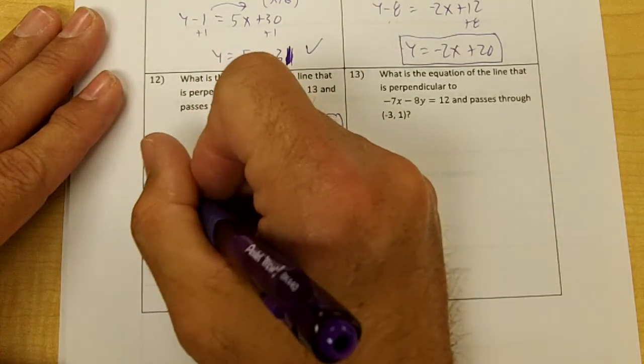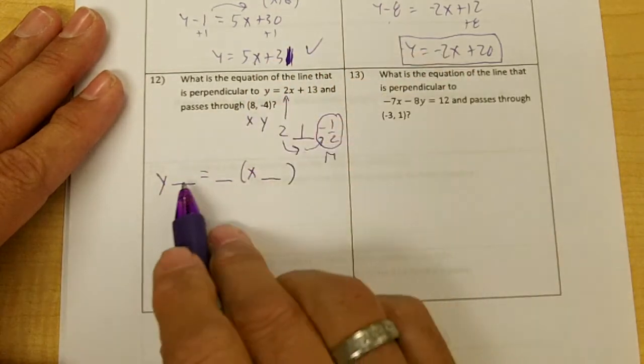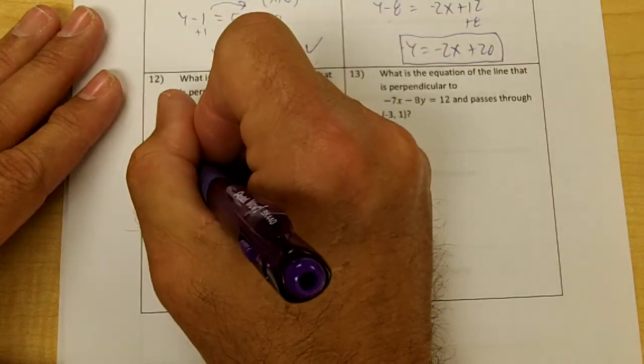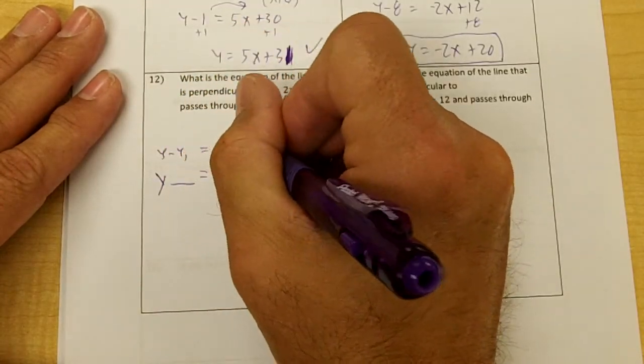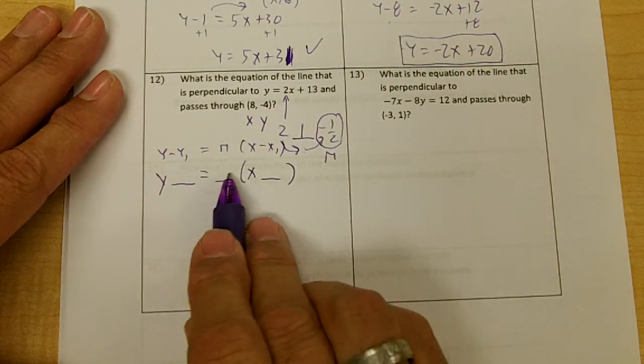Now I'm going to write down point slope and put the blanks. So I'm going to put a y here, an m here, and an x here. So basically it's y minus y1 equals m times (x minus x1), right? So draw your blanks—you're going to put y, m, and x.